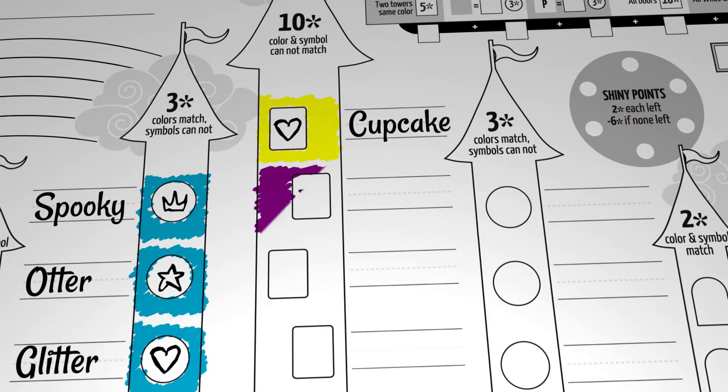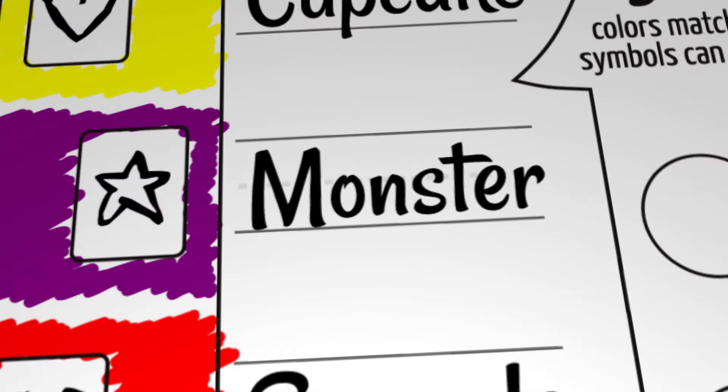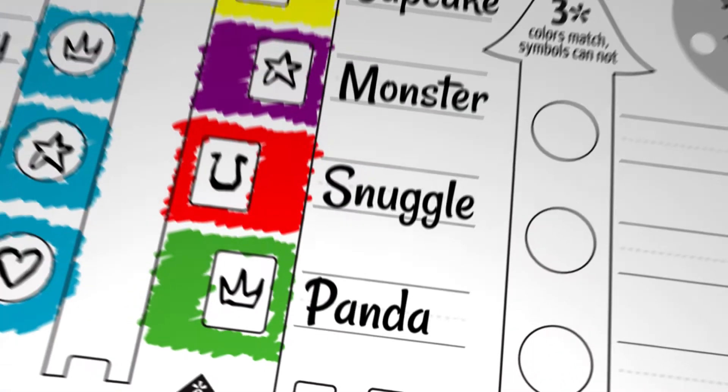Every card placed in the center tower must be unique in color and symbol. Cupcake Monster Snuggle Panda! Woohoo!